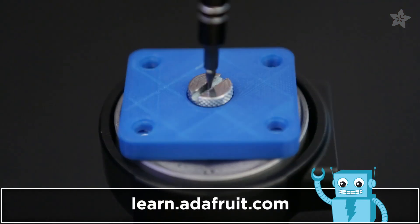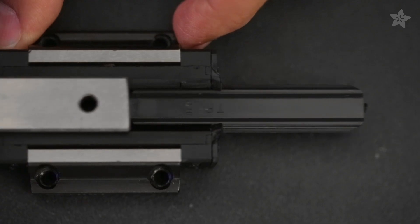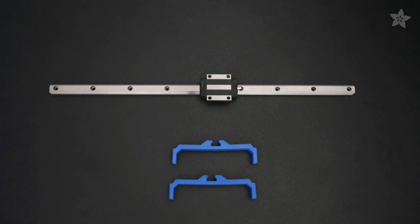The 3D printed adapter is secured to the tripod head. It's mounted to the platform which includes ball bearings for smoothly sliding along the supported railing.